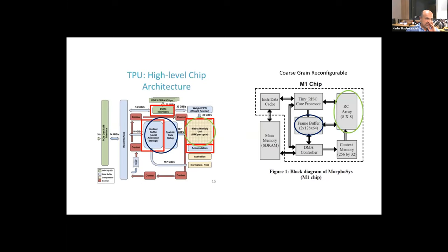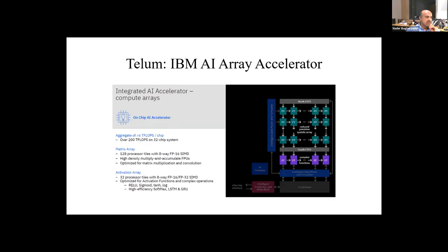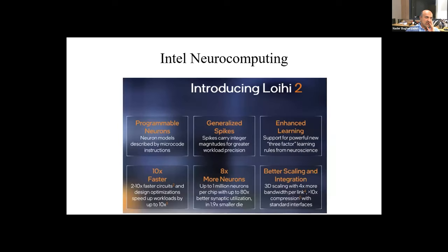IBM has announced the Tellurium — an array accelerator. You can see the array processor here. With 32 chips, they declare 200 teraflops. That's a lot, and it does 128 processor tiles. So there's a lot of competition going on. Between the TPU and our Morphosis work, you have a combination of SIMD or systolic arrays. Intel has the only spiking processor done by one of the major players. This has nothing to do with CNN — it's the spiking method, which looks at trails of spikes and decides on the output of the activation function.